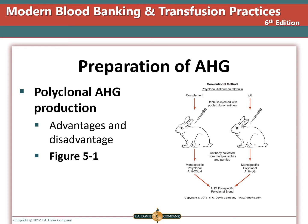Preparation of AHG: The polyclonal method was available for many years before we started using monoclonal hybridomas, and this procedure is not used as often now. An animal is injected with an antigen and then the animal becomes a blood donor to collect the antibodies. The disadvantages are that you have to use the animals with repeat bleeding, and it is difficult to get the concentrations just right because it is dependent on the reaction the animal produces. The reagent can detect a reaction with just an antibody, just complement, or both, and can detect many different epitopes on different immunoglobulins.